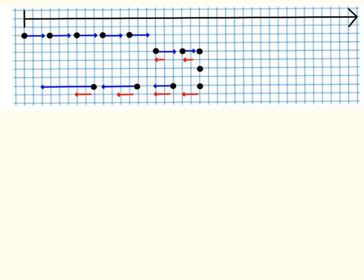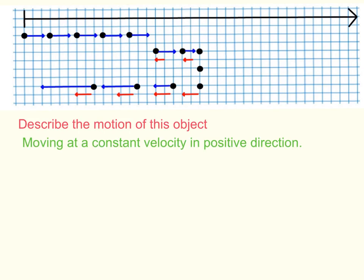This is a more complicated motion map. It shows an object doing different things. First, the object is moving at a constant velocity in the positive direction. Next, the object slows down in the positive direction.